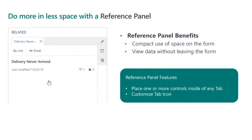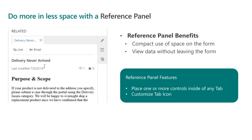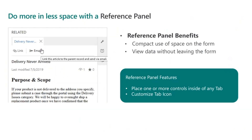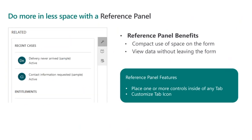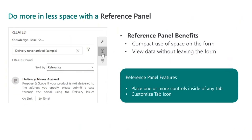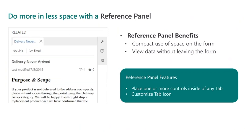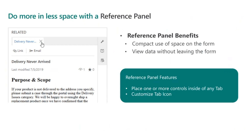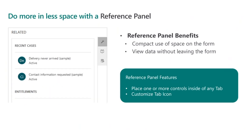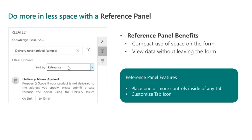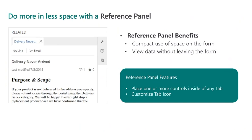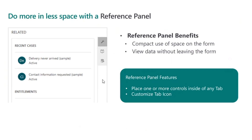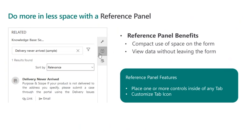The reference panel is a new feature in Unified Interface that allows users to do more with the same space. Users are able to quickly view related records without navigating away from what's important. In the example of a customer service use case, users can see other related cases, entitlements, or search knowledge base articles without leaving the main case form. You can also add multiple subgrids to your reference panel.